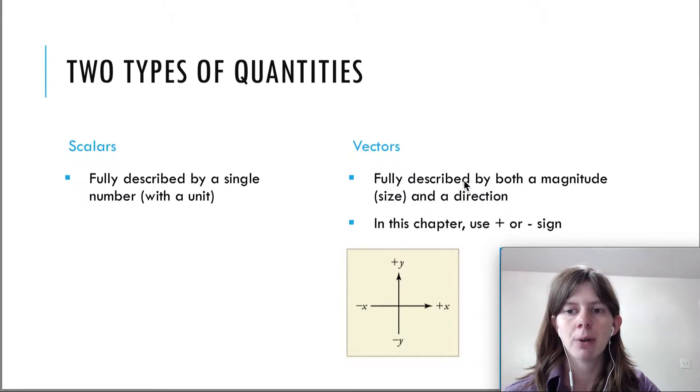And in this chapter, since we're focused on one-dimensional motion, we can use a plus or a minus sign to talk about direction. So if you're moving to the left or downward, that will be a negative, and if you're moving upward or to the right, that will be a positive.